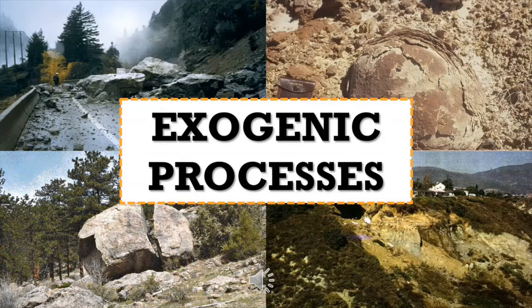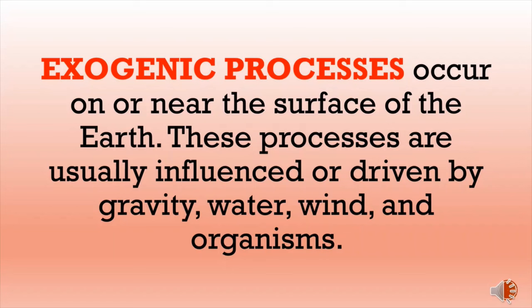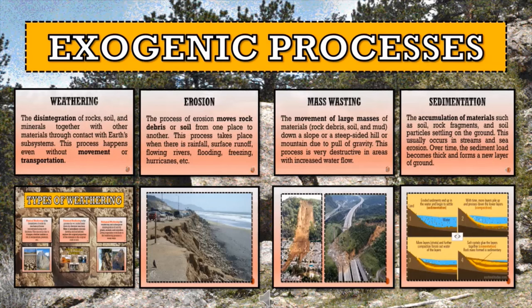We are done with endogenic processes. Let's proceed to exogenic processes. The exogenic processes occur on or near the surface of the Earth and are usually driven by gravity, water, wind, and organisms. These can be destructive occurrences that leave significant changes on the landscape and ecosystem. In extreme cases, exogenic processes can wipe out majority of organisms in an area, especially through mass wasting and erosion. The different types are weathering, erosion, mass wasting, and sedimentation.